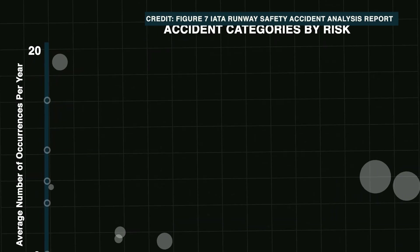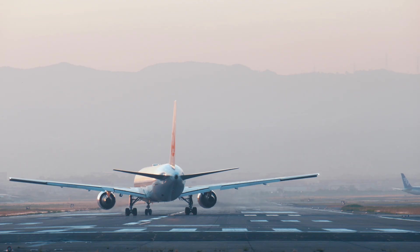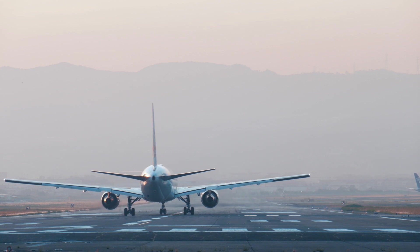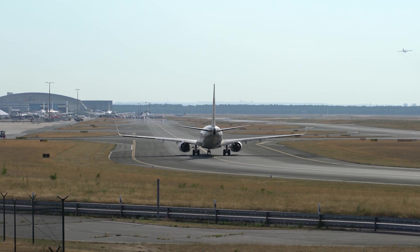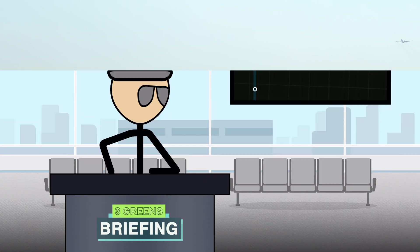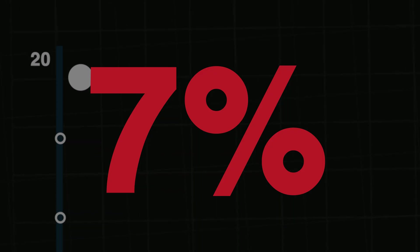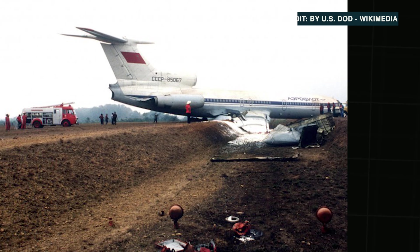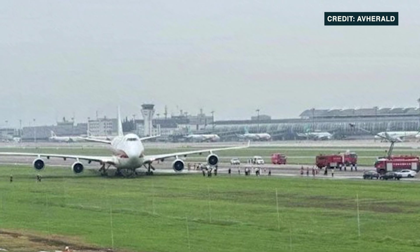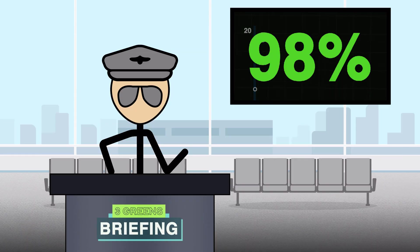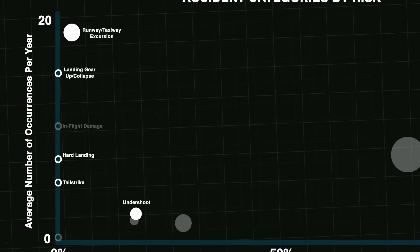Looking to the top of our chart, by far the most common accident category are excursions — when a plane incorrectly leaves a runway or taxiway. Embarrassing at the least for all involved, but they can be deadly, making up a total of 7% of accident fatalities. This is mostly due to the sheer fact that they're relatively common, though. Excursions have one of the highest survivabilities out of any accident type, with a survival rate of 98%.